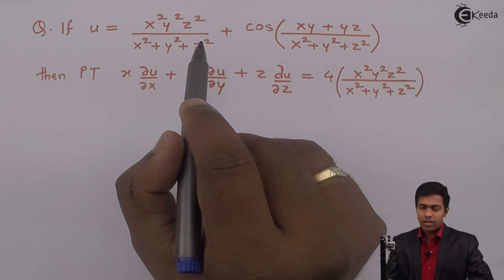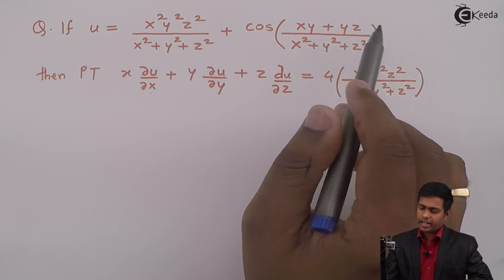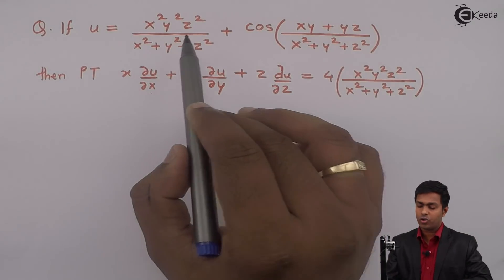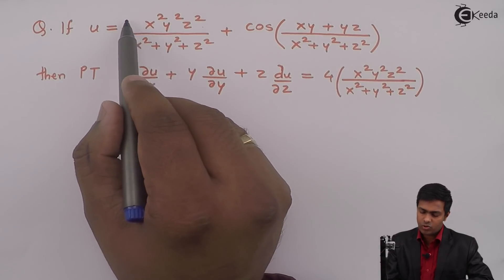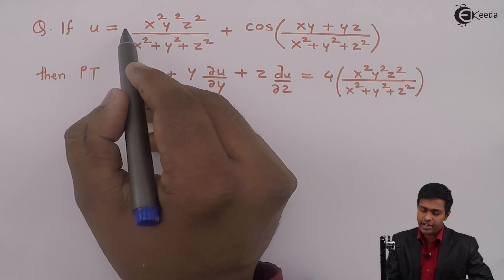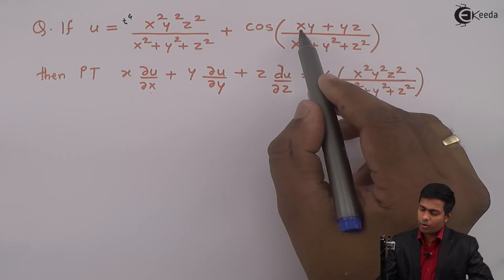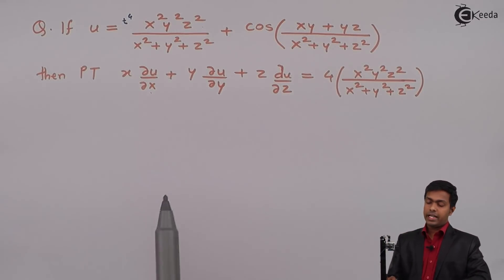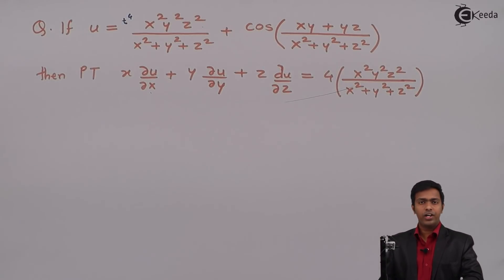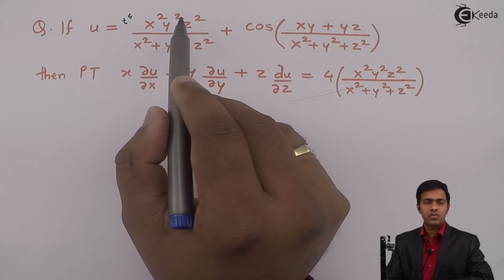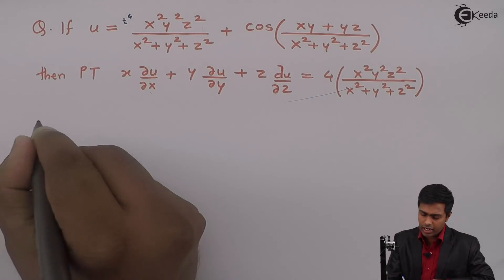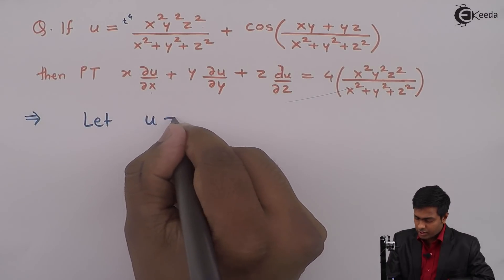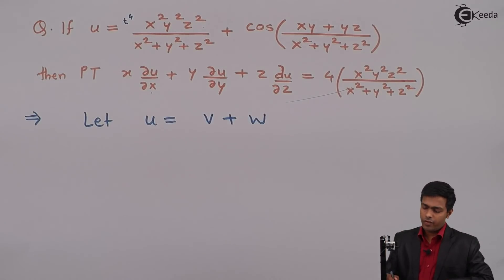If you look at the given function u, there are two functions. If you take the complete u, you will find it is not a homogeneous function — from the first part you get t⁶ in the numerator and t² from the denominator giving t⁴ extra, while from the second part you get no extra t term. So this whole function is not homogeneous. For that, we will separate u into two sub-functions.